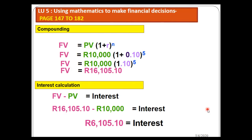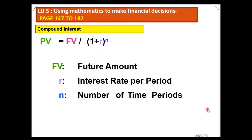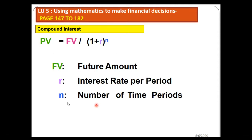Now let's look at the present value. The present value formula is different from the future value formula — it has been rearranged. The present value equals the future value divided by one plus r, in brackets, to the power n. FV stands for the future value, r stands for the interest rate, and n stands for the number of periods.